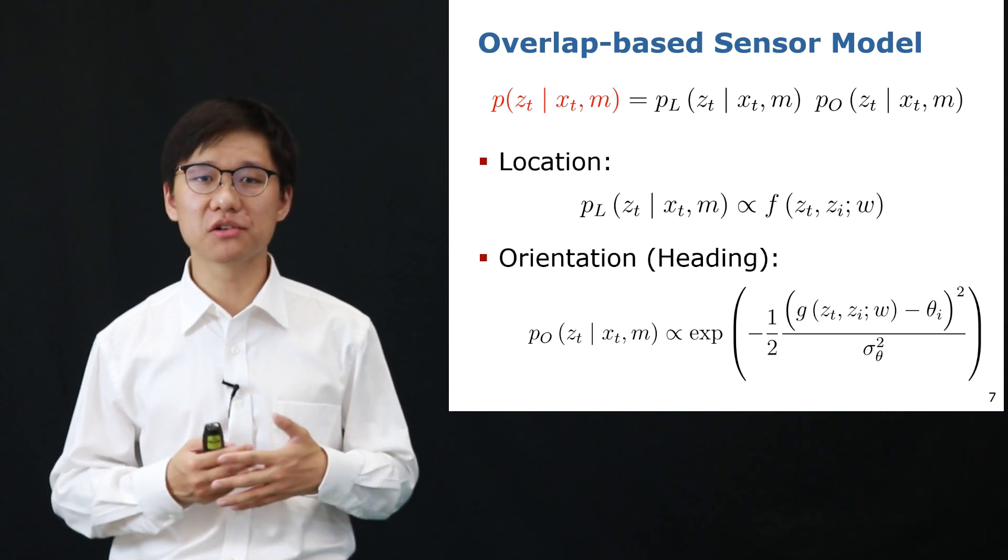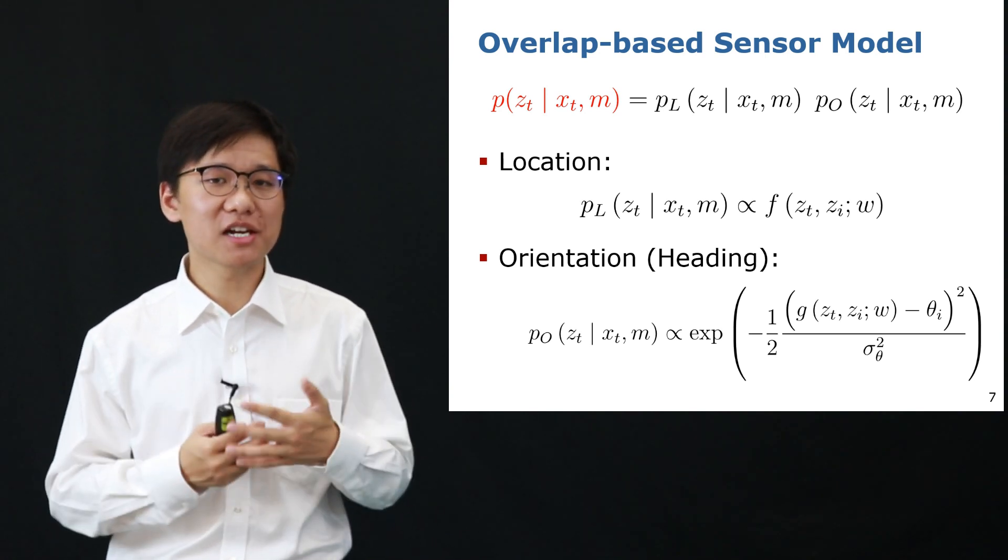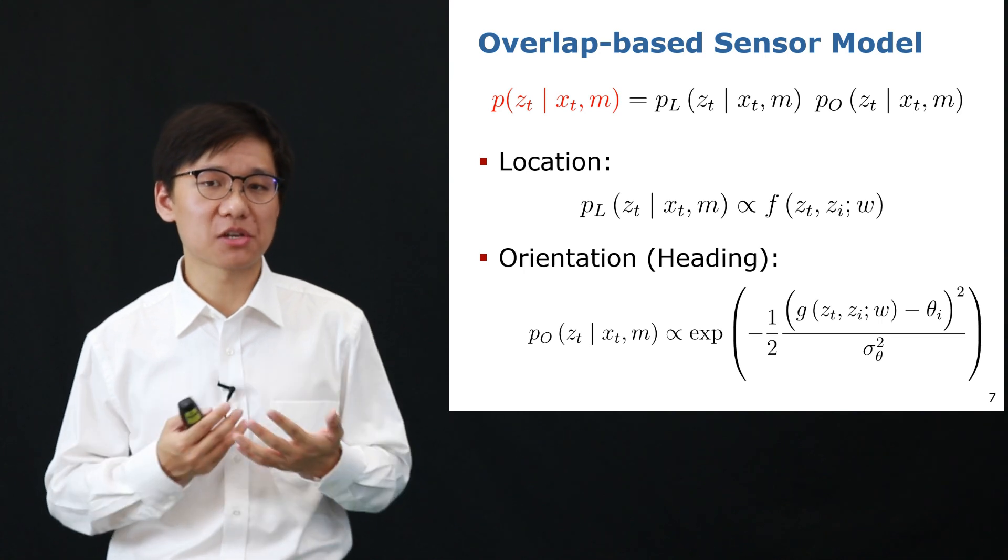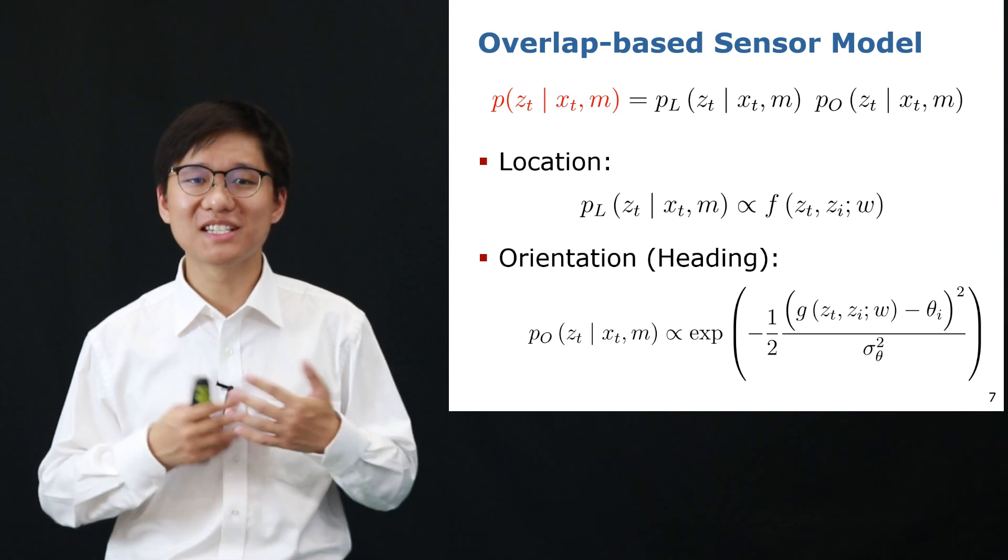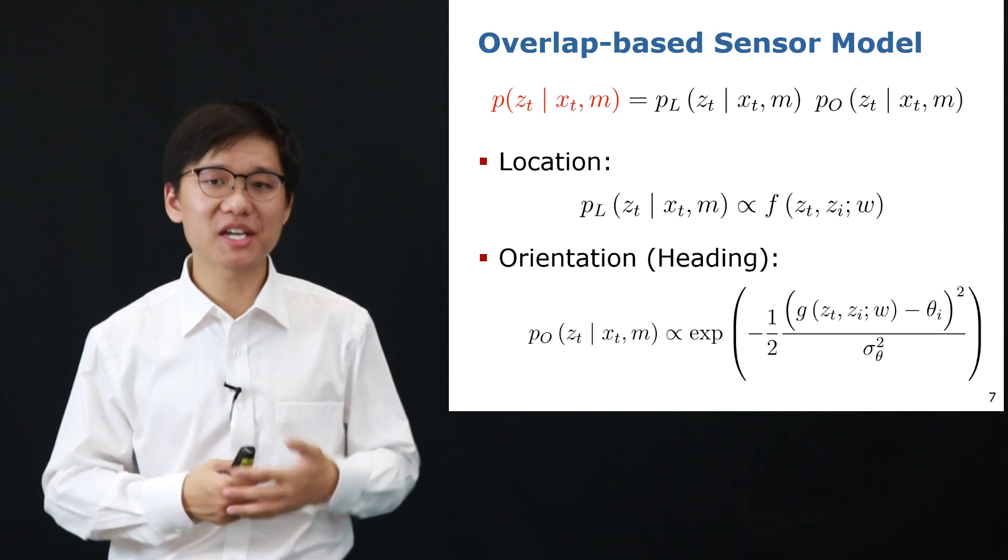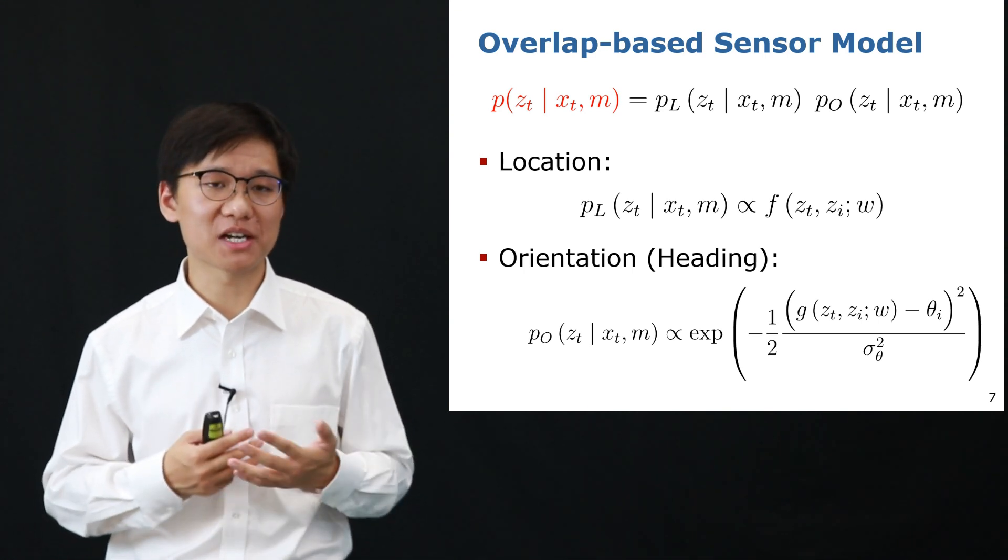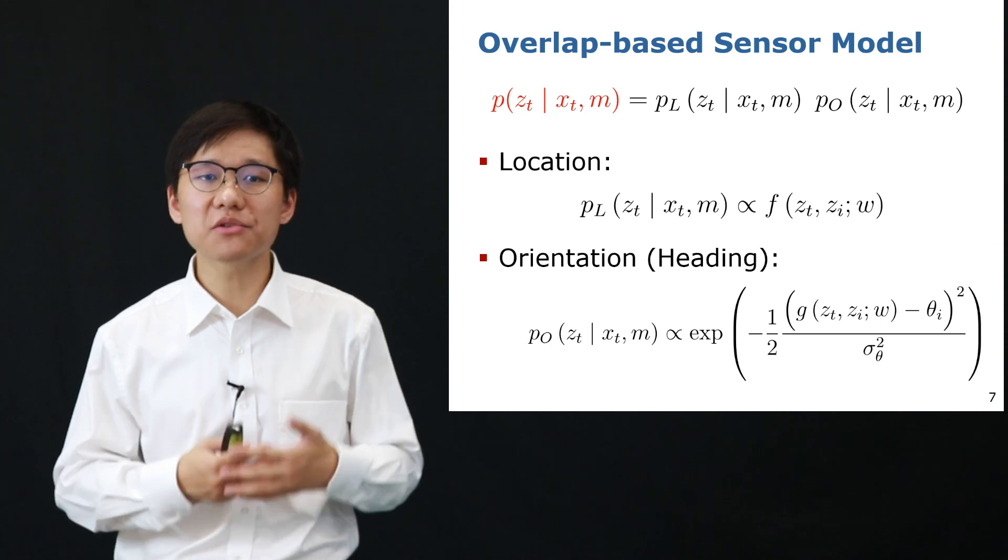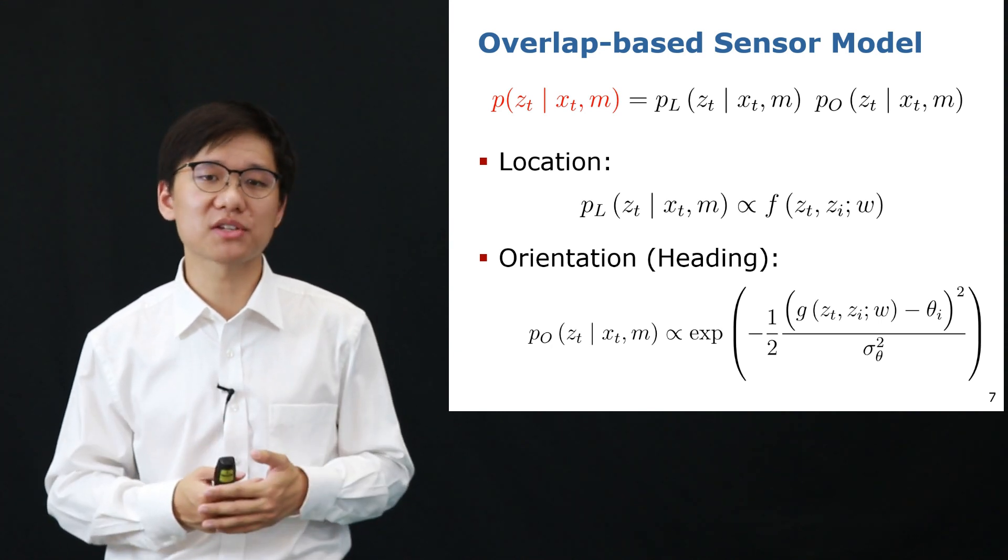For the location likelihood, we directly correlated it to the overlap estimate from the network, where z_t and z_p represent the observations of the query and the map frame of a particle respectively, and w is the pre-trained weights of the network.